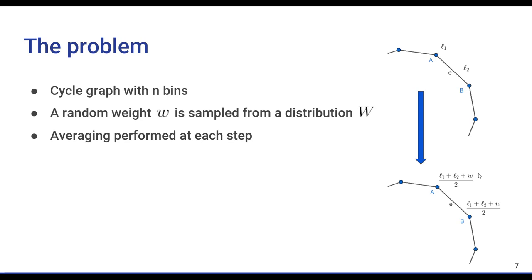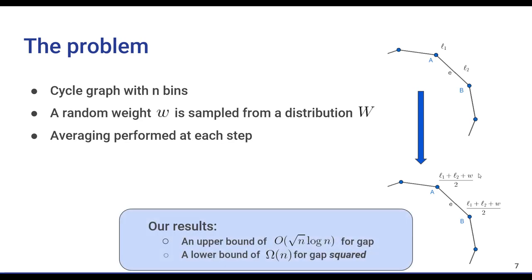Then, the endpoints of this edge receive the weight and perform an averaging step. For example, if the weights of the two endpoints are L1 and L2, and the weight of the ball in this step is W, they will both become (L1 + L2 + W) / 2 after this step. We provide an upper bound of O(√n log n) for the expected gap, and also a lower bound of omega of n for expected gap squared.